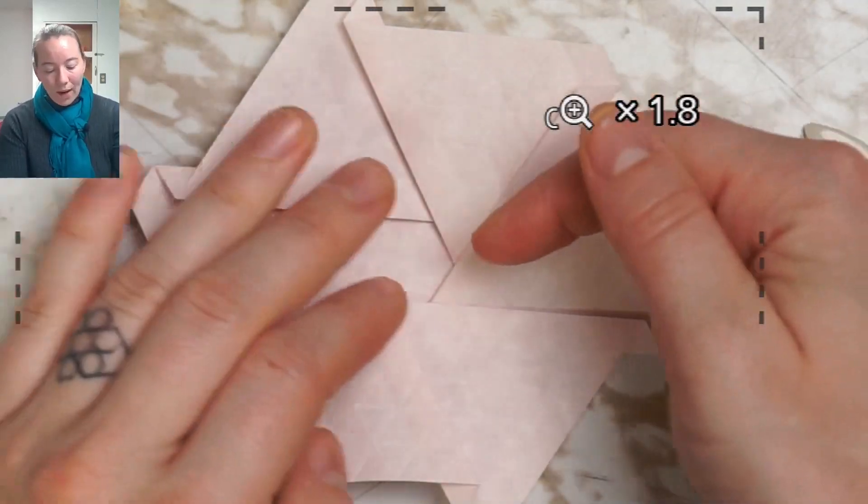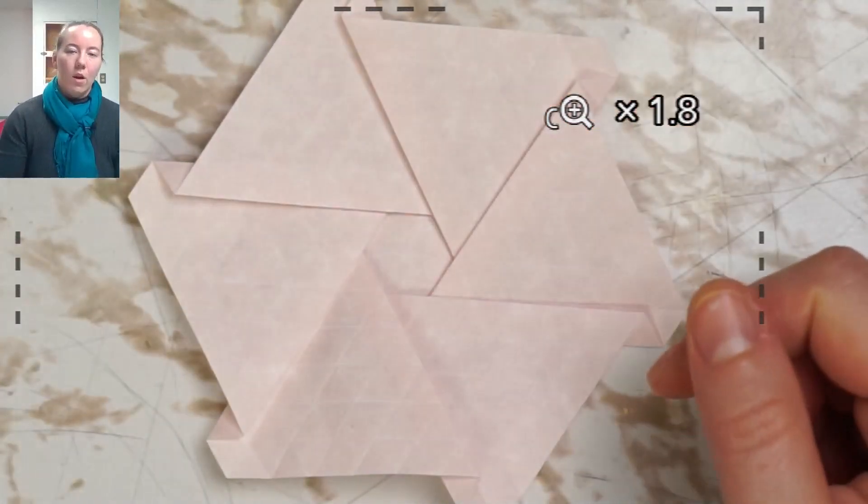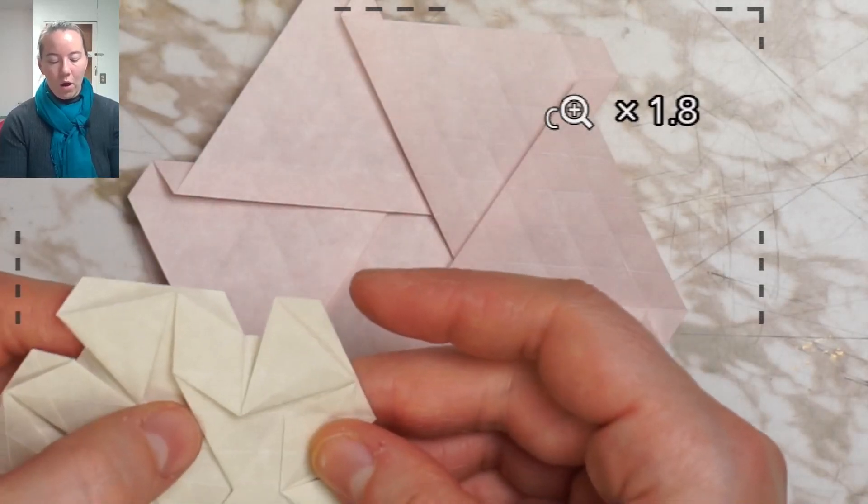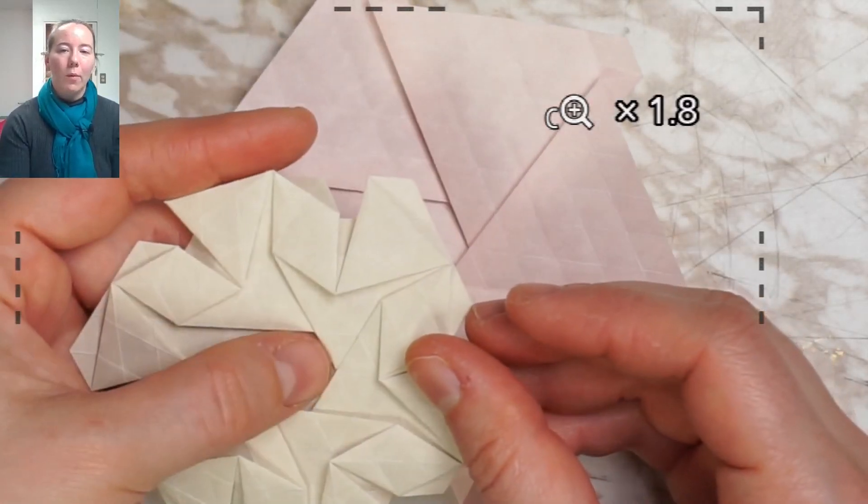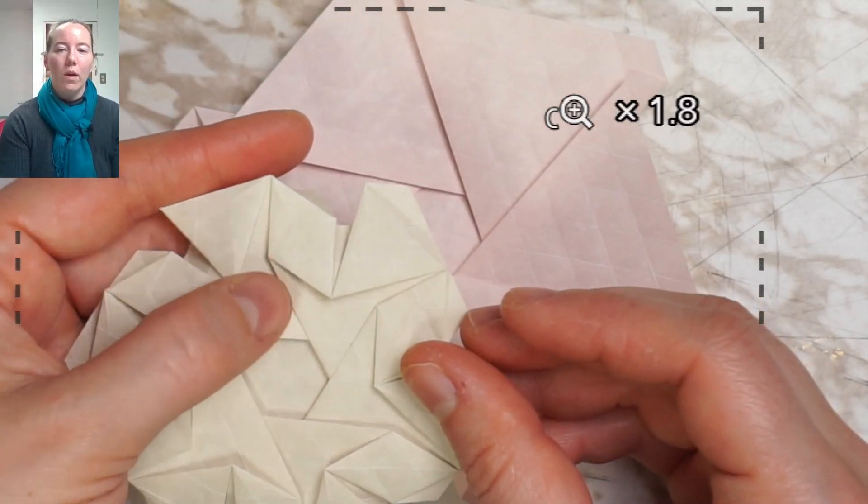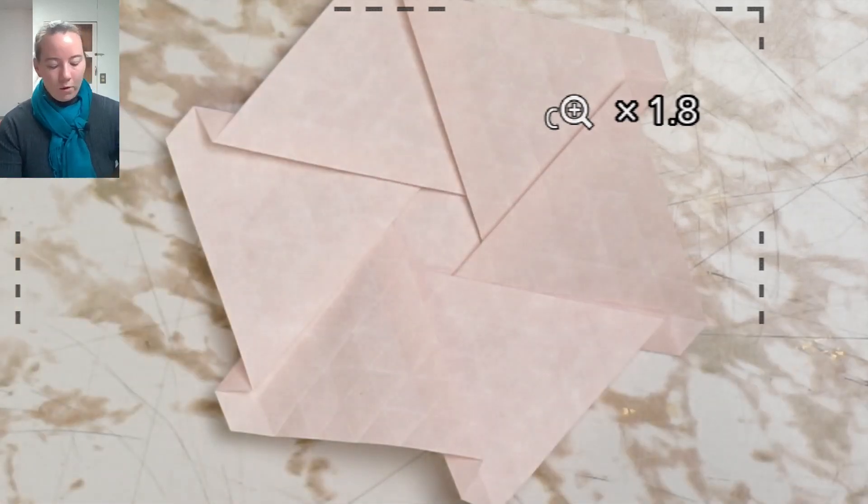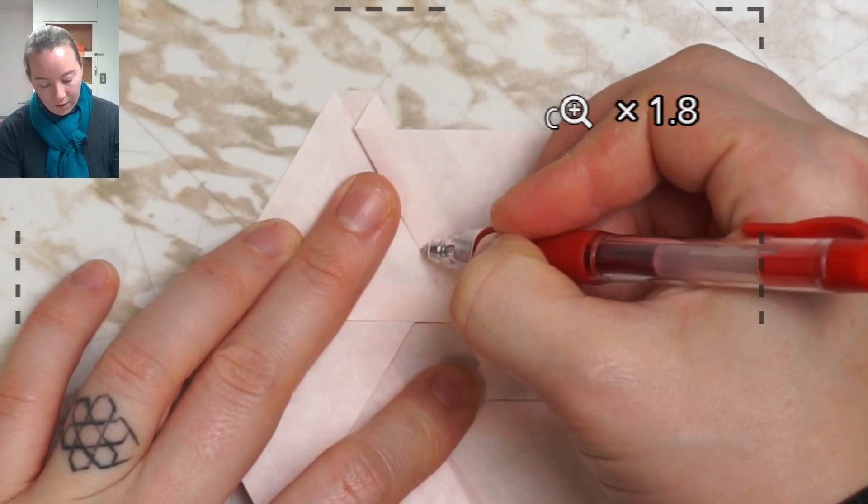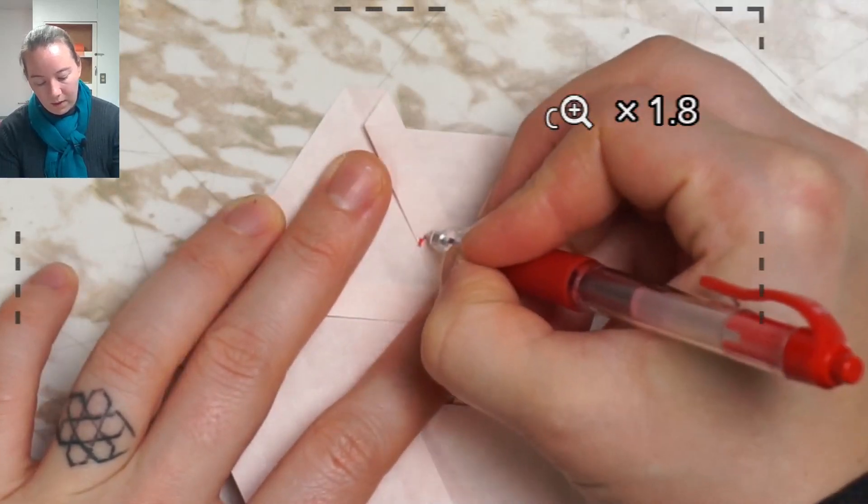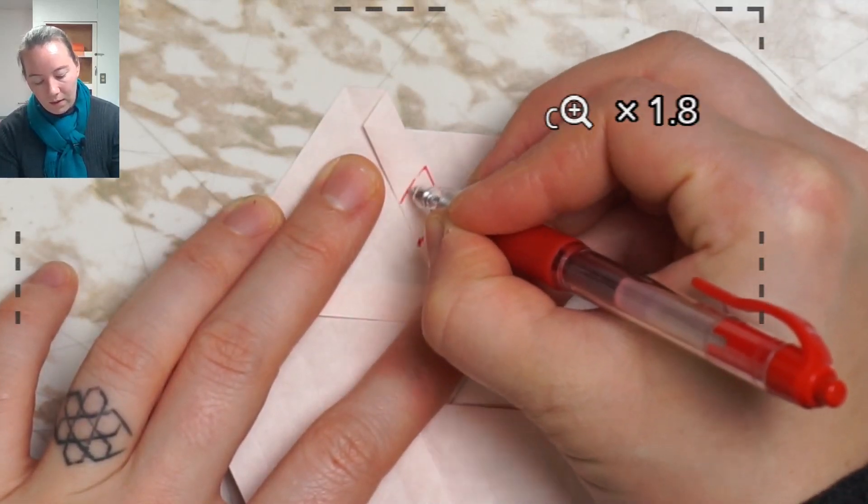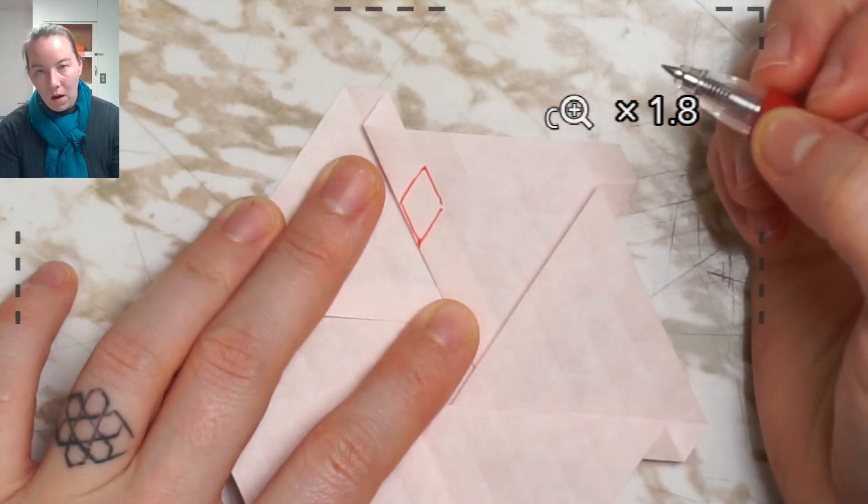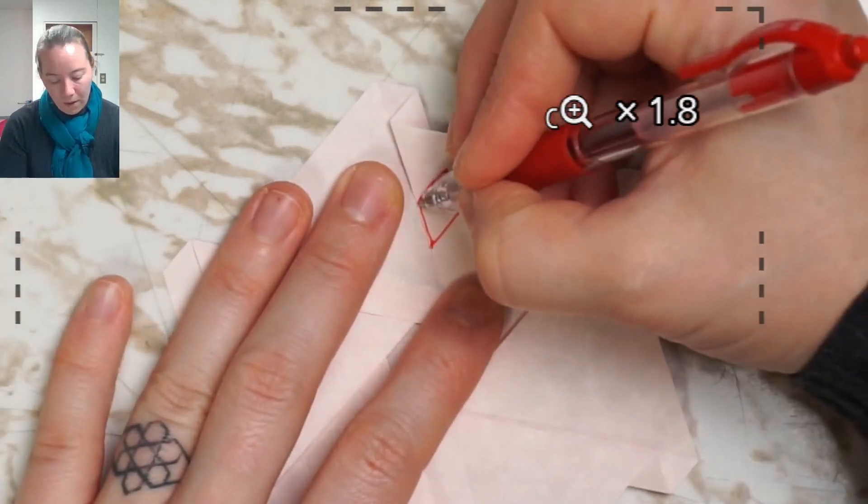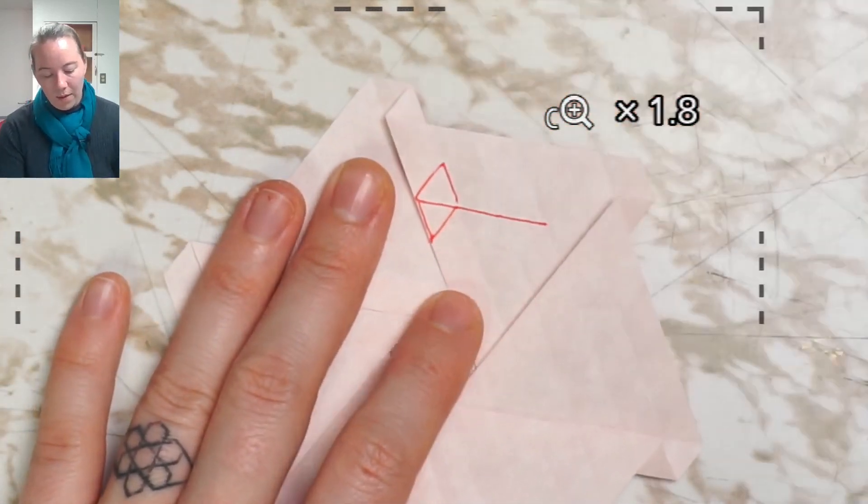Last time we had two spacings to reach the fat corner of our rhombus. This time we have one, two, three. So I'm going to go ahead and mark that position. Three spacings.